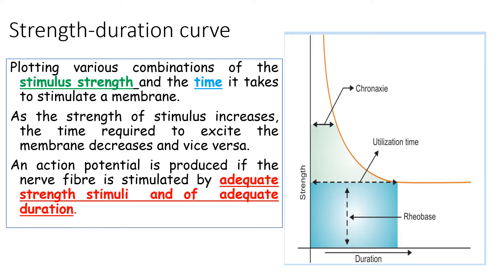The strength-duration curve is a graph plotted using different strengths of stimuli and different durations of time for studying the properties of nerve excitability. The strength is plotted along the y-axis and the duration along the x-axis. As the strength of the stimulus increases, the time required to excite the membrane decreases, proving that an action potential is produced only if the nerve is stimulated by adequate strength and adequate duration.